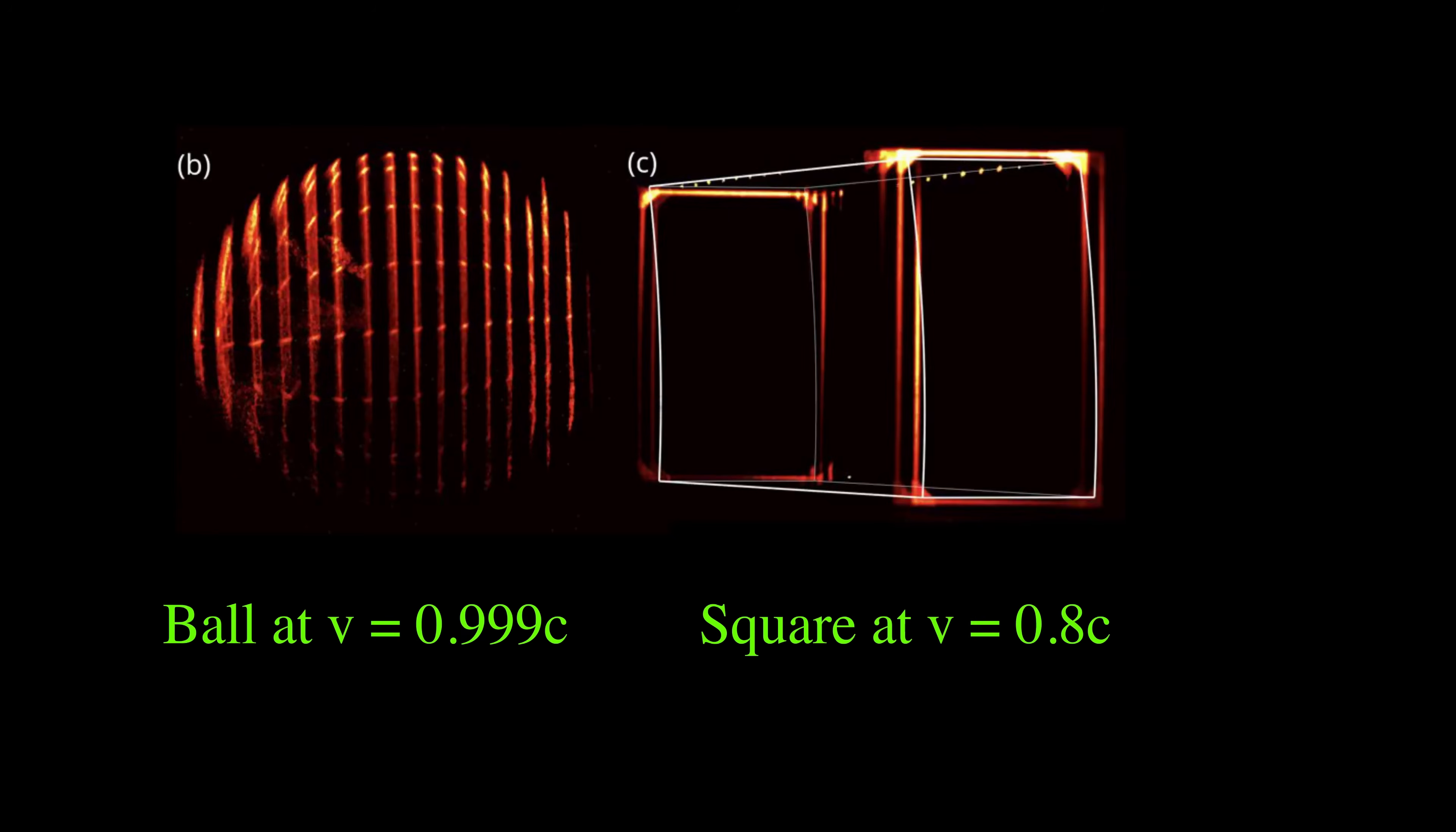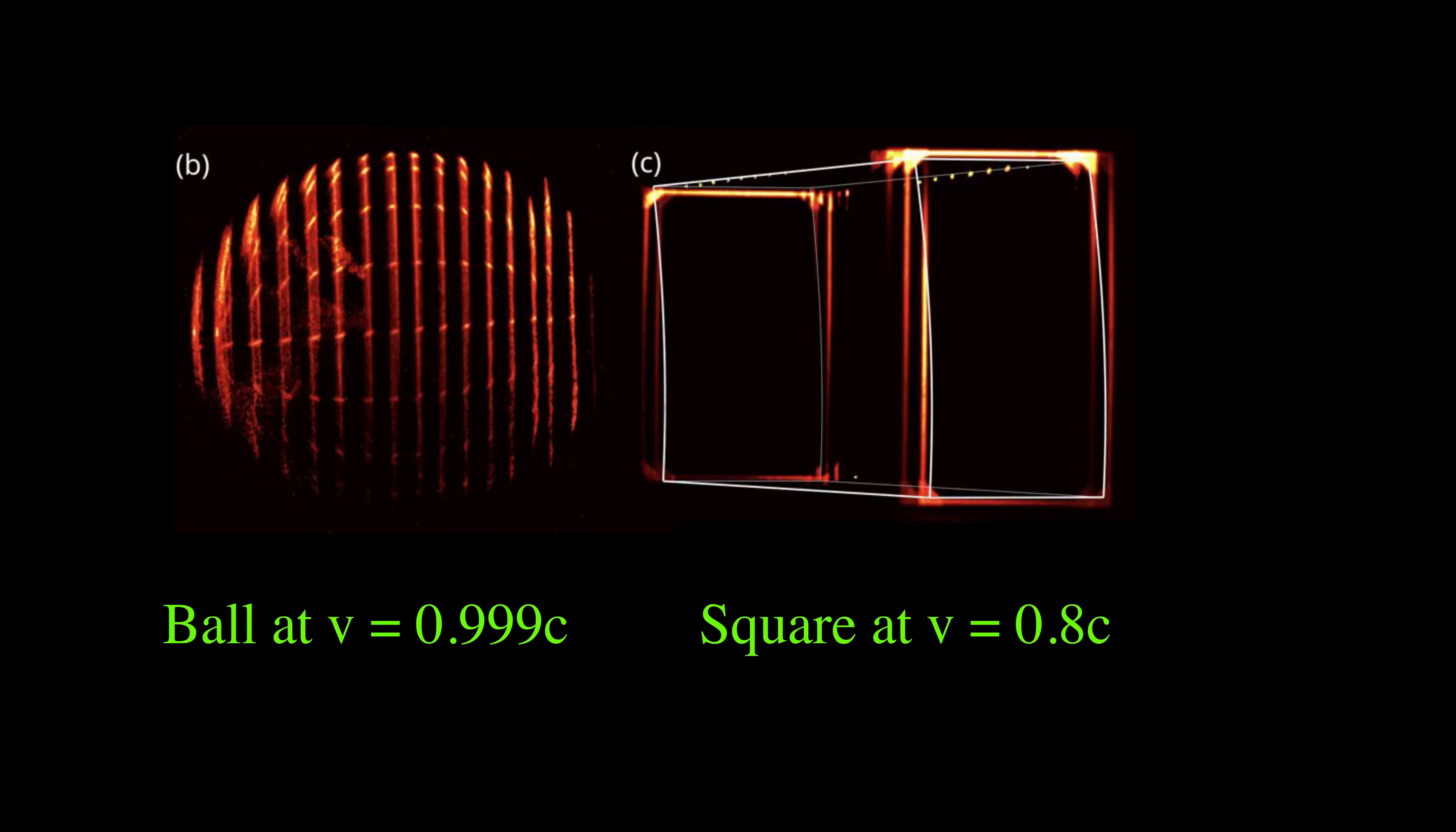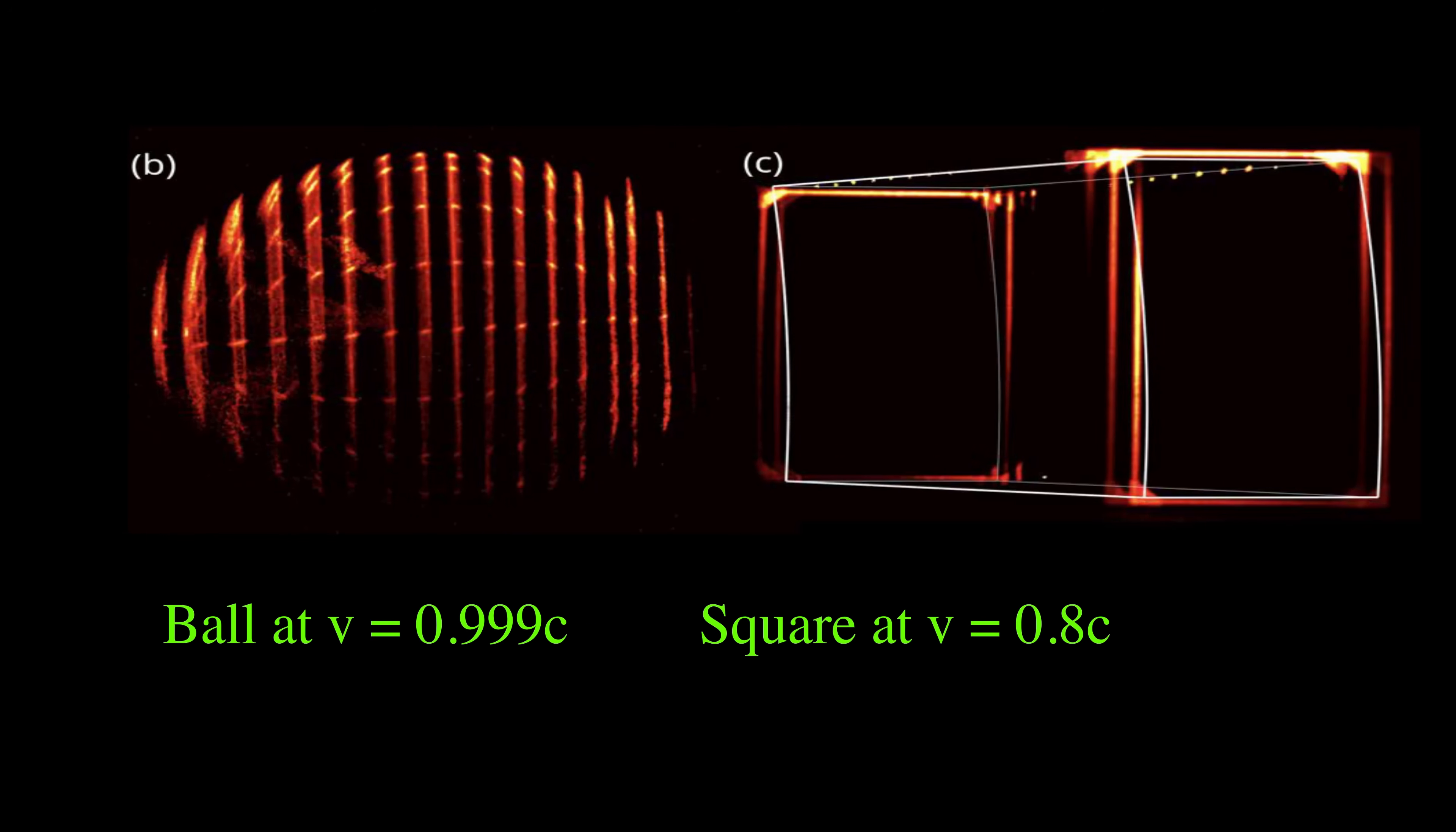First, could we say that this is another confirmation of the special relativity? And the answer is no, because this analogy experiment only captures the visual effect of a fast-moving object due to the limited speed of light. These pictures look exactly as they would if you had a ball or cube moving at relativistic velocities.